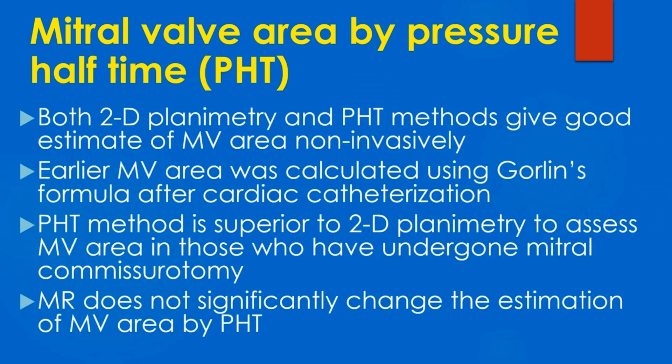Both two-dimensional planimetry and the PHT method give good non-invasive estimates of mitral valve area. Earlier, mitral valve area was calculated using Gorlin's formula after cardiac catheterization. The PHT method is superior to two-dimensional planimetry for assessing mitral valve area in those who have undergone mitral commissurotomy. Mitral regurgitation does not significantly change the estimation of mitral valve area by PHT.